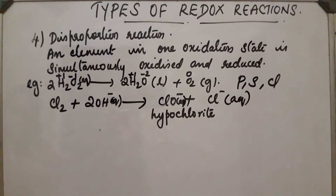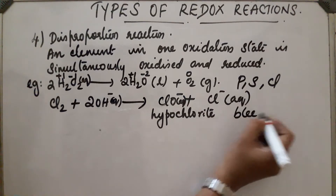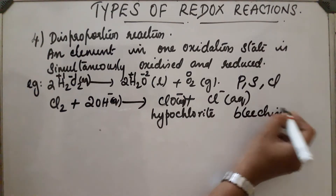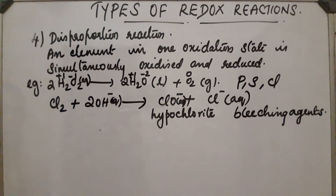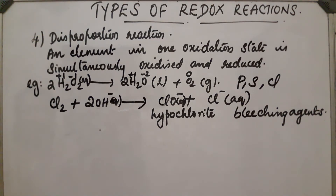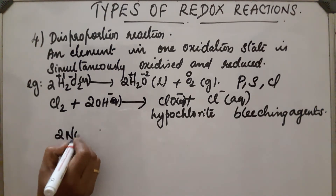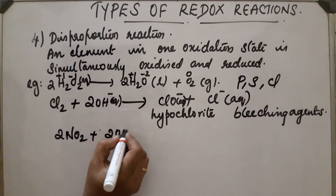This reaction takes place in the formation of bleaching agents. The hypochlorite obtained oxidizes colored compounds to colorless ones, which is why it is used as a bleaching agent. Another disproportionation reaction: 2NO₂ + 2OH⁻ → NO₂⁻ + NO₃⁻.